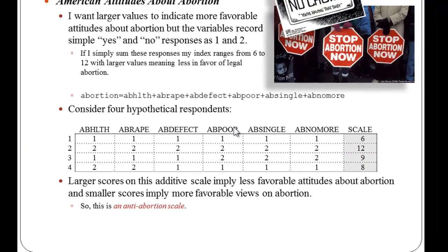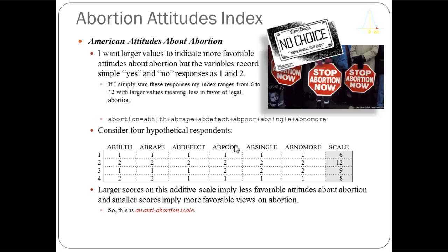The two things I don't like about this index are: it doesn't start at zero or one — it starts at six, which doesn't really make sense — and the low values represent what I'd like to be coded higher. I'm really trying to make an index of pro-choice attitudes, not anti-abortion attitudes.